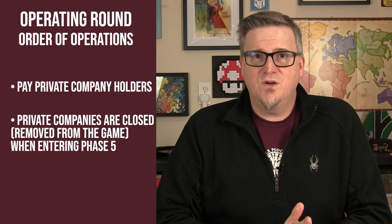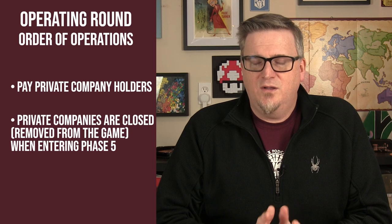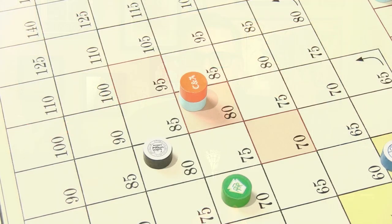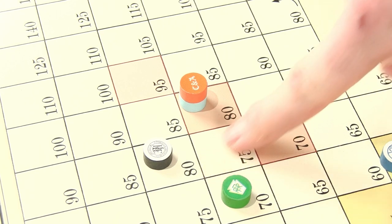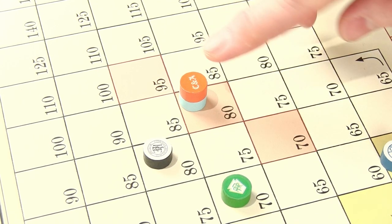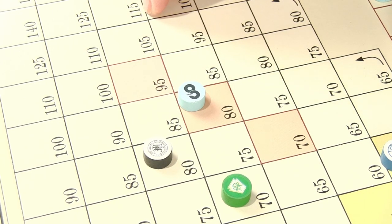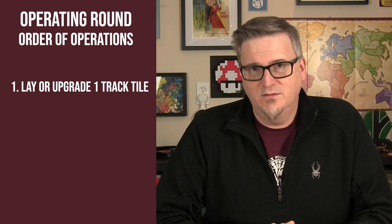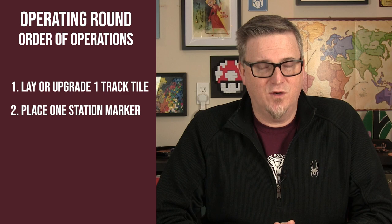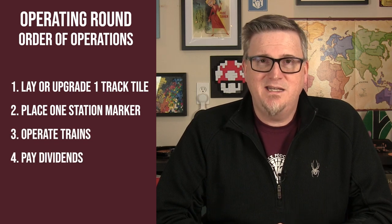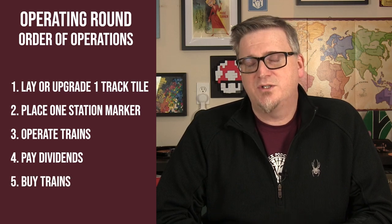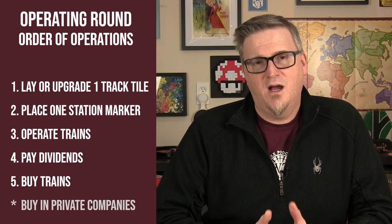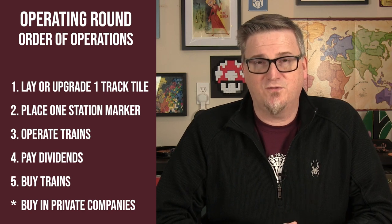The first part of every operating round is to pay the holders of the private companies any income due — either to players' cash reserves or companies' treasuries. Note that all private companies close when the first five train is bought. The company with the highest stock value operates first. Once a company has operated, move its token as dictated by its actions and flip it upside down, then move to the next company. During a company's operating turn it must follow a specific sequence: lay or upgrade one track tile, optionally lay one station marker and pay for it, run its trains, pay any dividends, and then buy trains. At any point during its turn it may buy private companies from other players, but not from other companies.